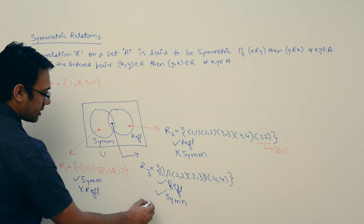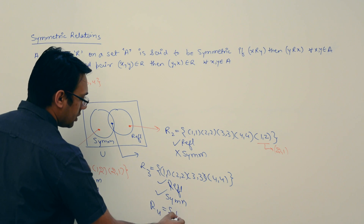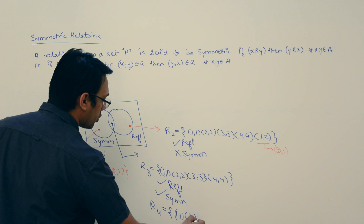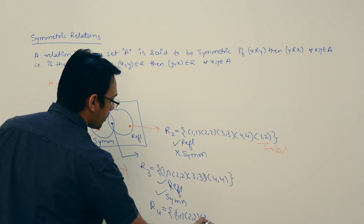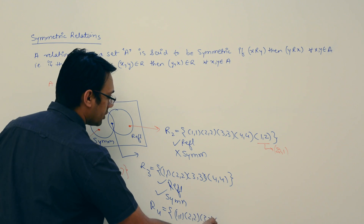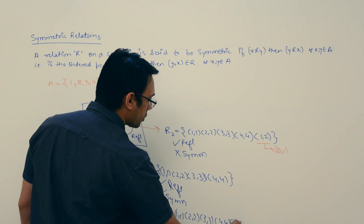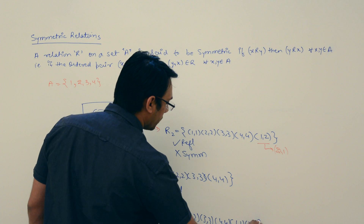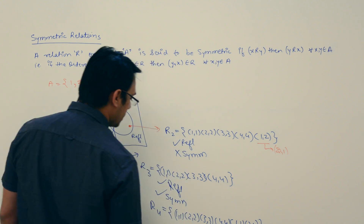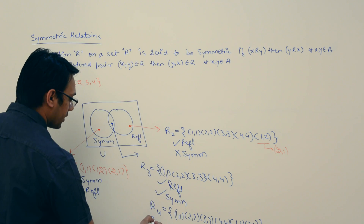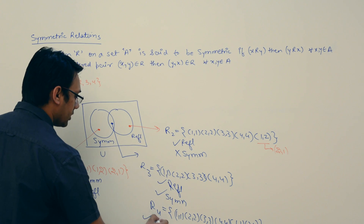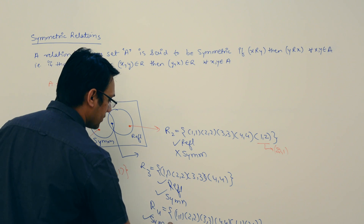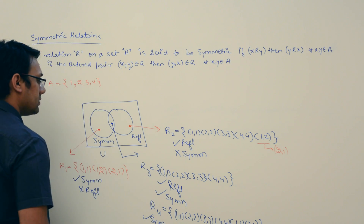Another example of a relation that is both reflexive and symmetric is R4 = {(1,1), (2,2), (3,3), (4,4), (1,2), (2,1)}. This relation is reflexive as well as symmetric.